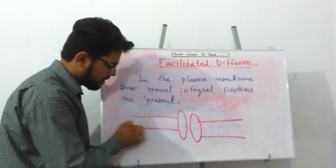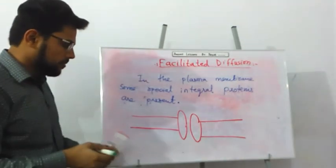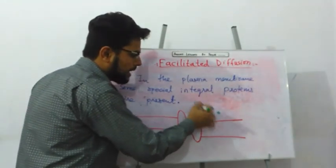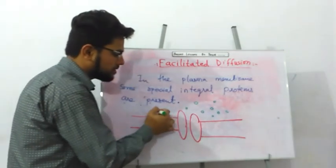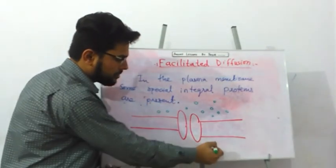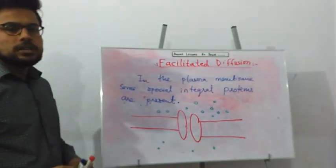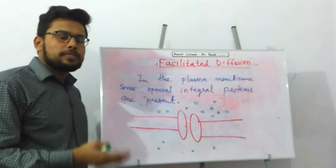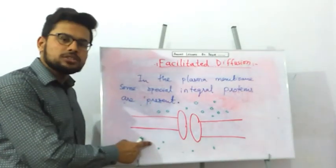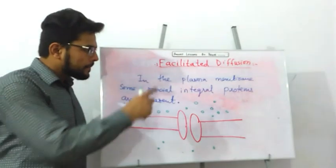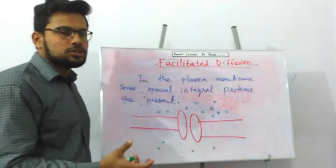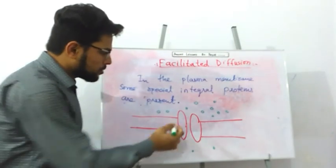For example, glucose molecules are present in high concentration on one side and in low concentration on the other side. Diffusion is the movement of solute particles from a region of high concentration to a region of low concentration. In facilitated diffusion, this protein helps in the transportation of the glucose molecule.